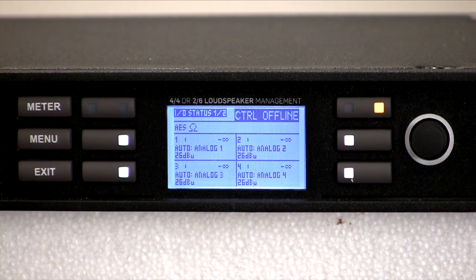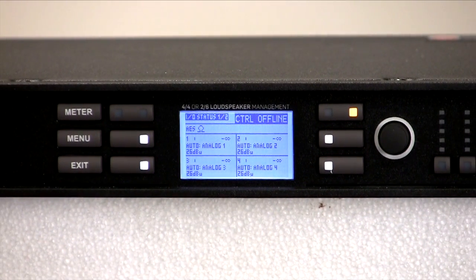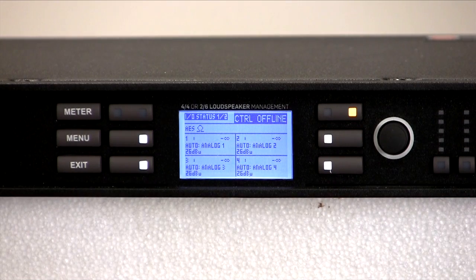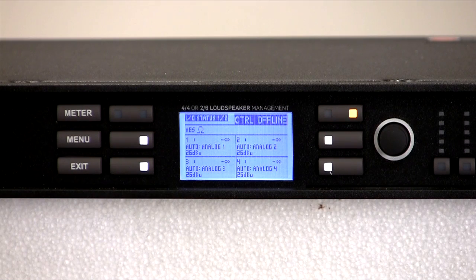In meter mode you can scroll through different meter screens. Module meter screens show you level and gain reduction meters and module labeling. Input status screens give you status of the eight input routers, the meters, and access to input router mutes.